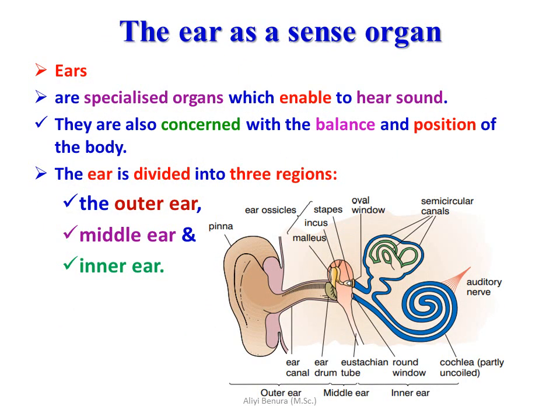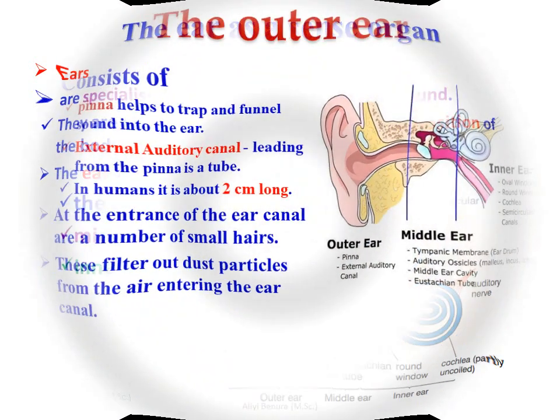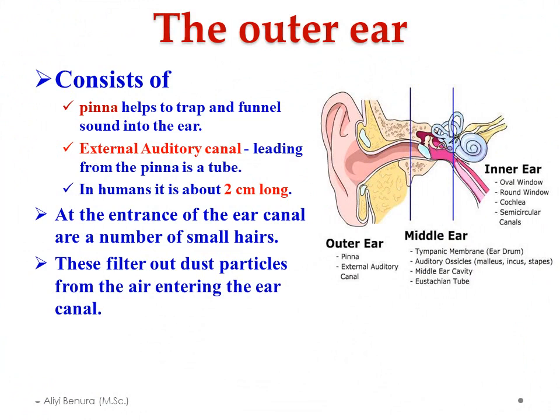The ear is a sensory organ — specialized for hearing sound — and is also concerned with balance and position of the body. The ear is divided into three regions: the outer ear, the middle ear, and the inner ear. The outer ear consists of the pinna, which helps to trap and funnel sound into the ear, and the external auditory canal, which leads from the pinna. In humans it is about 2 cm long. Along the ear canal are small hairs that filter out dust and particles from the air entering the ear.